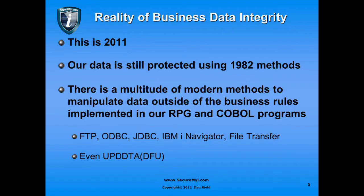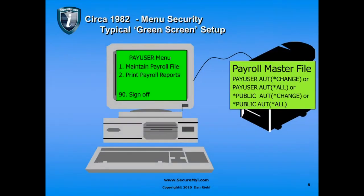This can be done maliciously or by sheer accident. In 1982, users would sign on and be presented with a menu. Here is an example of a payroll user menu with three options: maintain the payroll file, print the payroll reports, and sign off.